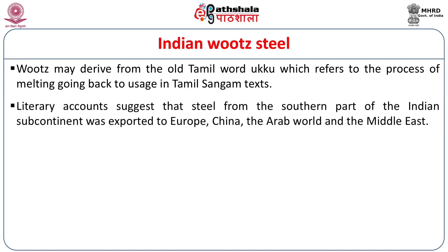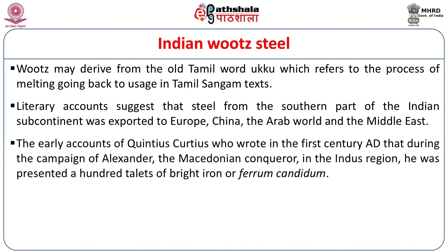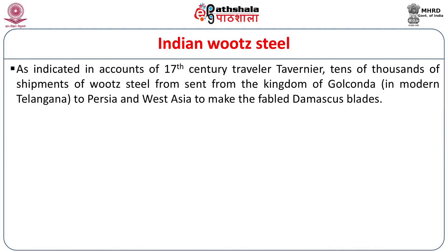Literary accounts suggest that steel from the southern part of the Indian subcontinent was exported to Europe, China, the Arab world, and the Middle East. According to the early accounts of Quintus Curtius, he wrote that in the first century AD, during the campaign of Alexander the Macedonian conqueror in the Indus region, Alexander is said to have been presented with a hundred talents of bright iron, or ferrum candidum. As indicated in the accounts of the 17th-century traveler Tavernier, tens of thousands of shipments of wootz steel were sent from the kingdom of Golconda in modern Telangana to Persia and West Asia to make the fabled Damascus blades.